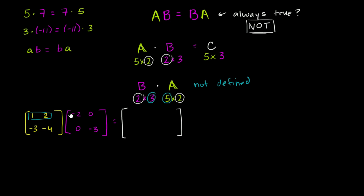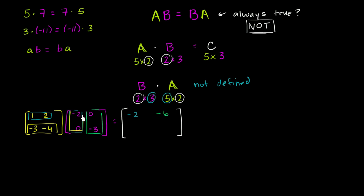So the first entry is 1 times negative 2, which is negative 2, plus 2 times 0, giving negative 2. For the next entry — first row, second column — 1 times 0 plus 2 times negative 3 gives negative 6. For the third entry — second row, first column — negative 3 times negative 2 is positive 6, plus negative 4 times 0, so positive 6. Finally, the second row times the second column: negative 3 times 0 is 0, plus negative 4 times negative 3 is positive 12.